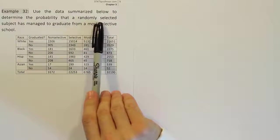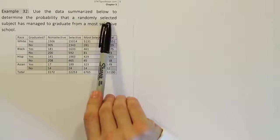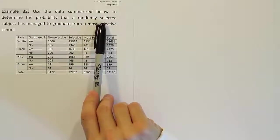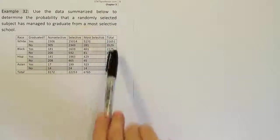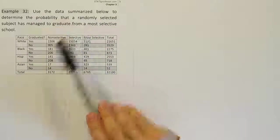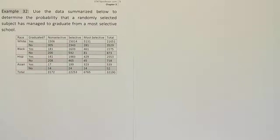So let's pause there before we read the rest of it. A randomly selected subject is indicating just one subject will be selected. There's just one event, reaching into the population of people who are in this group and drawing one person out of it. And they're looking for the probability that that person would manage to graduate from a most selective school.